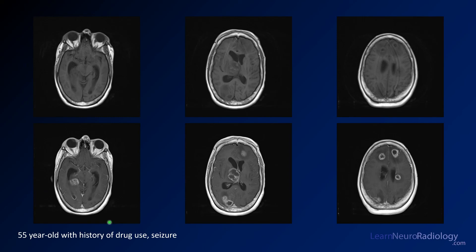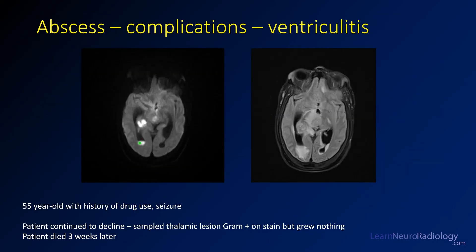On pre- and post-contrast imaging you again see the largest lesion in the thalamus — very avidly peripherally enhancing with pus centrally. Some higher lesions are enhancing peripherally with some areas of more solid enhancement. There is also enhancement in the dependent portion of the ventricle, indicating spillage of pus with associated ventriculitis. Pus is bright on diffusion layering in the ventricle, with incomplete suppression on FLAIR and periventricular edema on both sides.